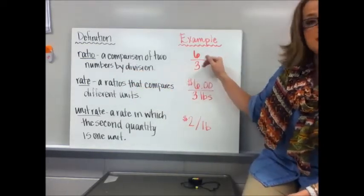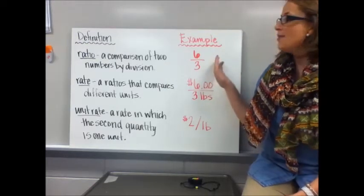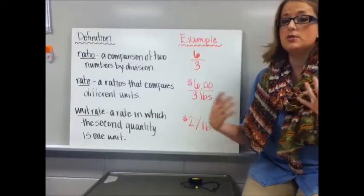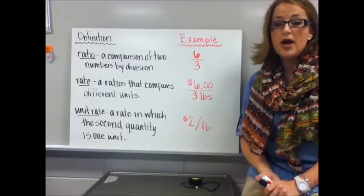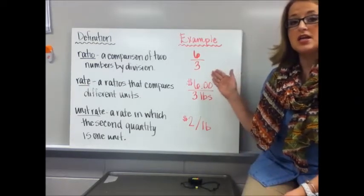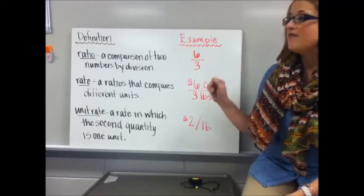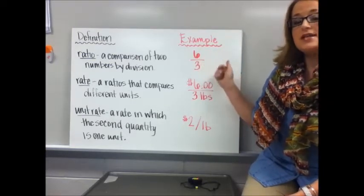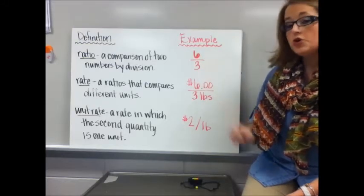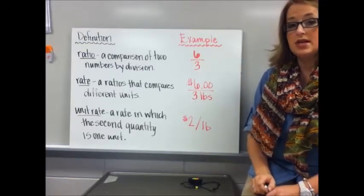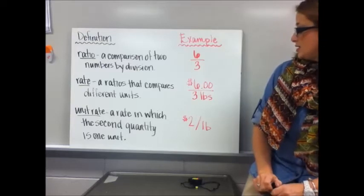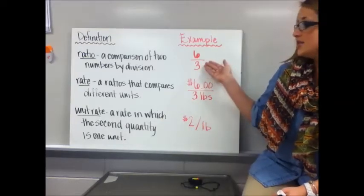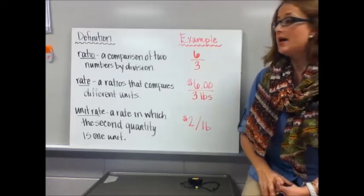An example of a ratio is 6 over 3, and that might make you a little bit uncomfortable because you're thinking it should be simplified down to a whole number of two. If we were talking about a fraction, that would be the case. However, with a ratio, it does not have to be simplified down to a whole number. You could simplify it down by reducing it to 2 over 1, and you'll see that when we come down to the unit rate. But as it is, that is an okay way to write a ratio.